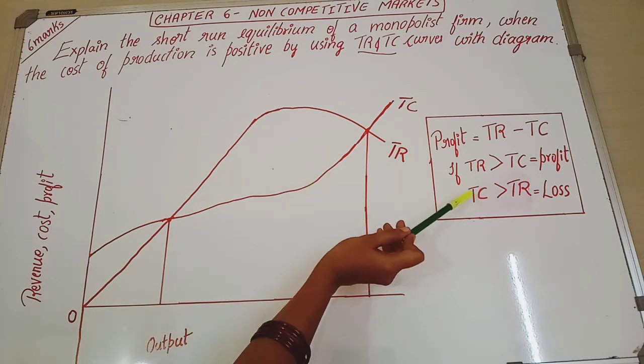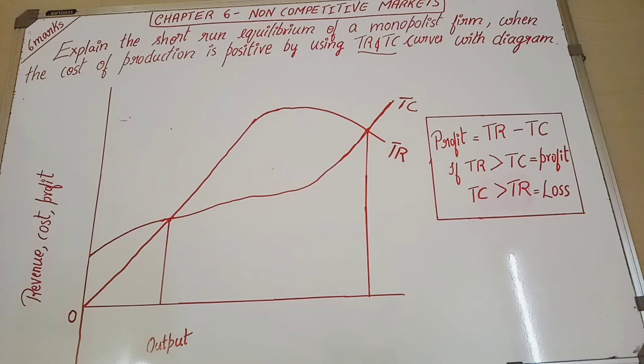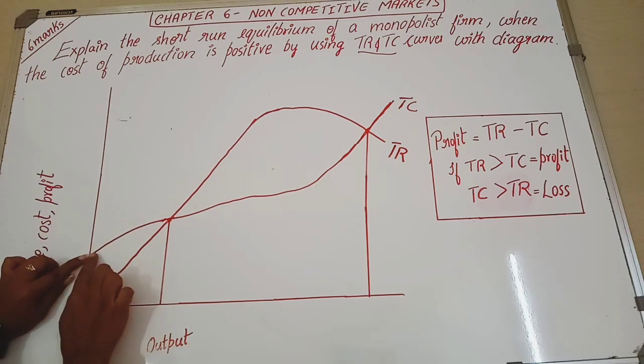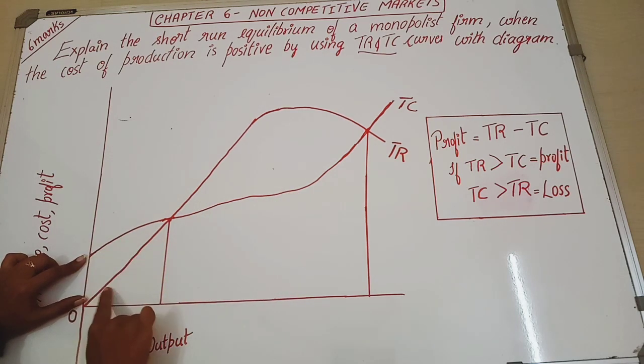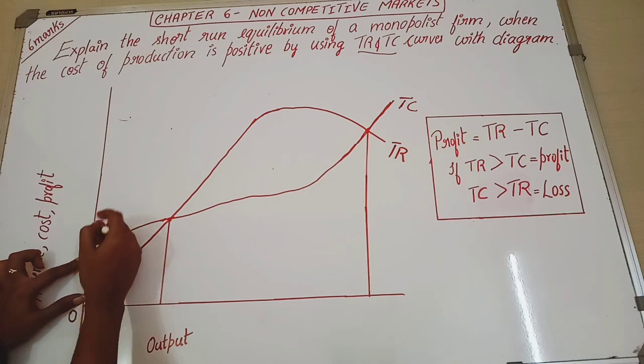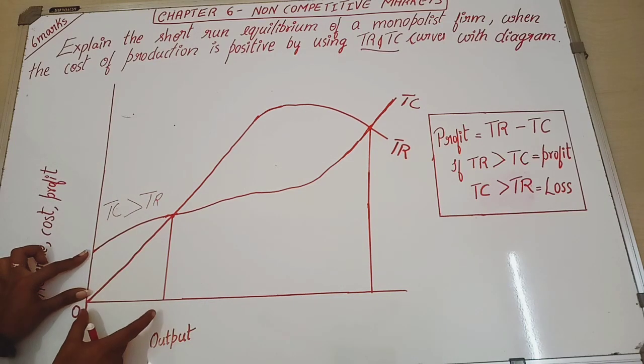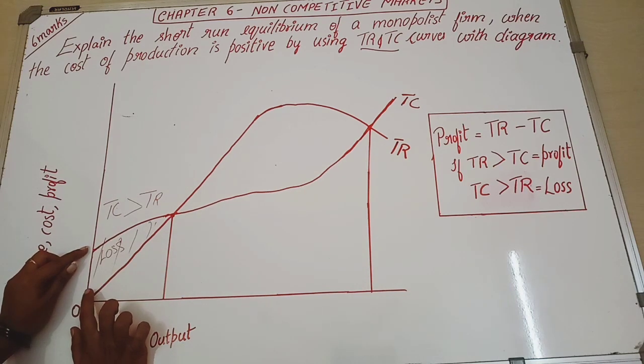So when do we say that there is a profit in a firm? Whenever the total revenue is greater than the total cost. Then what is loss? When my total cost is greater than the total revenue. So total cost is my total expenditure. If that is greater than my total revenue or total income, then that we consider as loss. Now this is something that everybody knows.